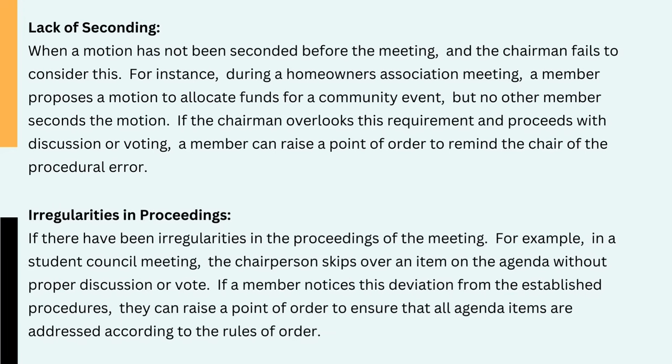5. Irregularities in proceedings — if there have been irregularities in the proceedings of the meeting. For example, in a student council meeting, the chairperson skips over an item on the agenda without proper discussion or vote. If a member notices this deviation from the established procedures, they can raise a point of order to ensure that all agenda items are addressed according to the rules of order.